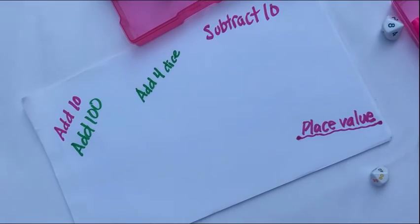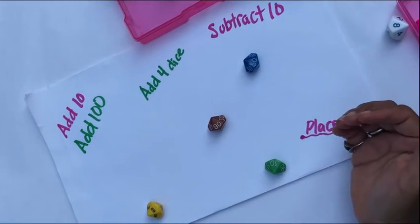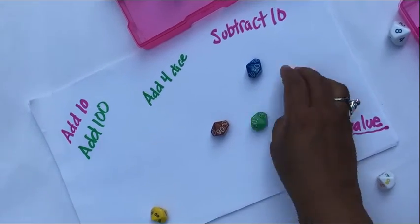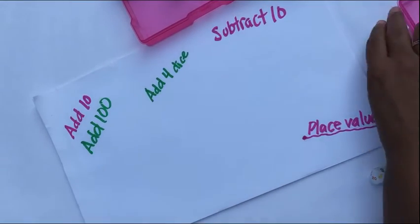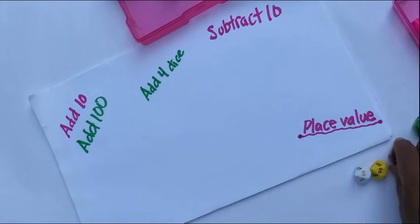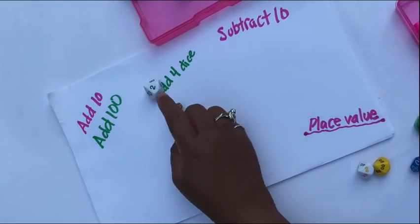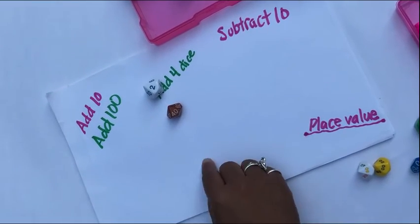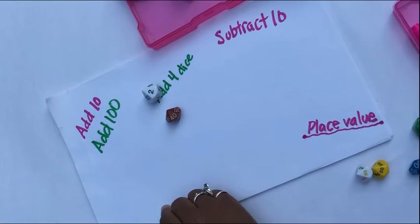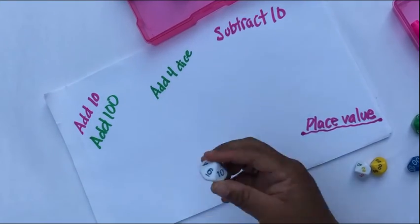Another thing you can do is roll a single digit and the double digit multiples of 10, so 40 plus 2, and the kids would have to write it in expanded form and write it in word form. So there's some really good stuff that you can do.